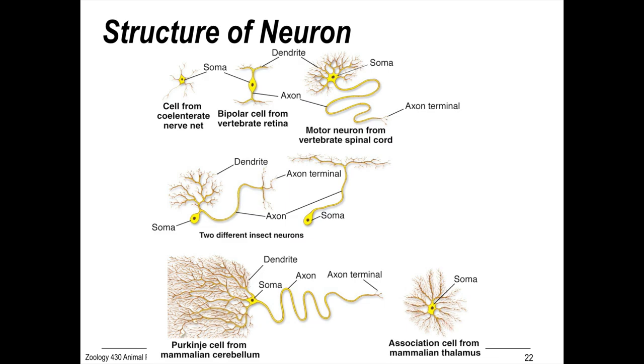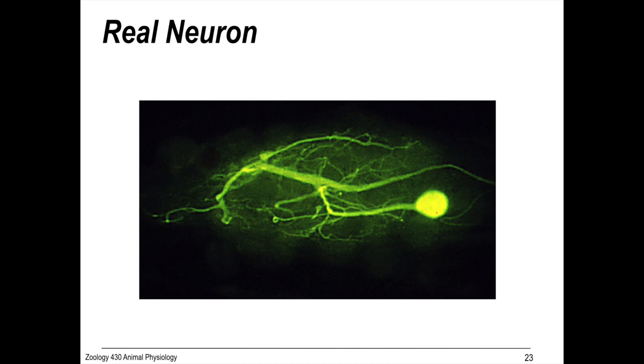And here's a cell from the thalamus. Real neurons have a complex anatomy, but you can see elements of all of the things that we just talked about.